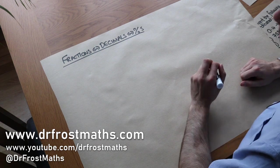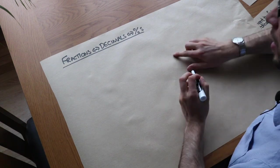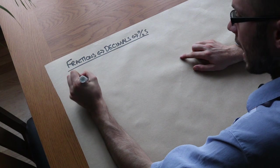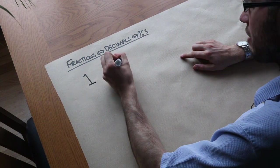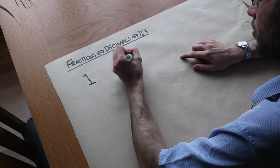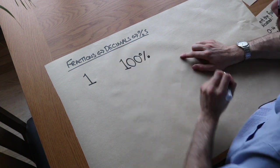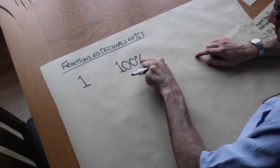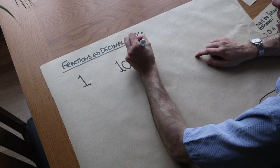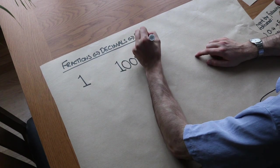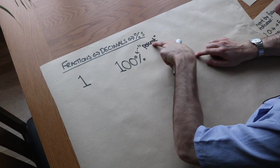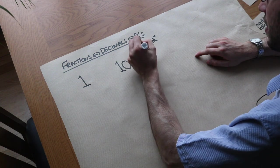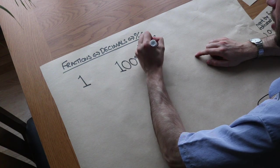Now the first thing we need to appreciate is how we represent a whole of something. So we could represent a whole of something as a whole, to say that we have all of it, or we could represent it as 100%. Now we cover percentages in other videos, but what that symbol there means is percent. And percent means per 100. Cent means 100, a bit like century means 100 years, it just means out of 100, per 100.